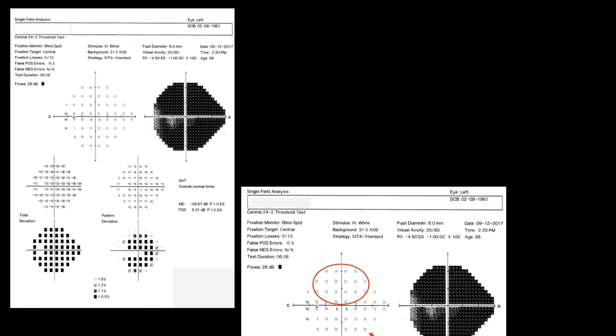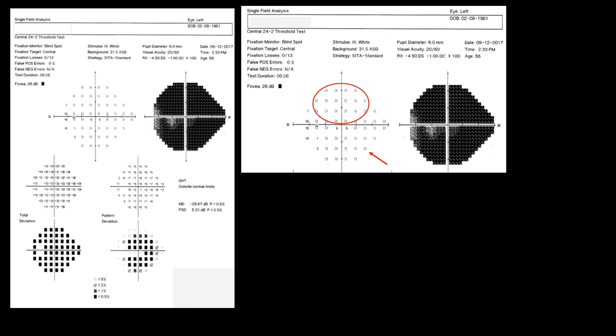This puzzling printout shows threshold sensitivity values less than 1dB instead of the usual 0dB in the raw data, which means that 1dB was the strongest intensity projected by the perimetry and these stimuli were not perceived by the patient.